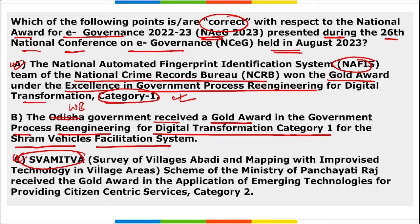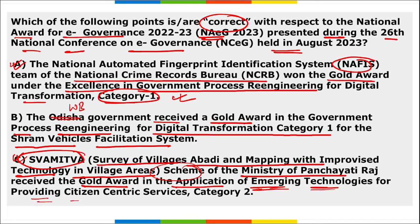Option A states that the NAFIS team of the National Crime Records Bureau won the gold award under excellence in government process re-engineering for digital transformation category 1 — absolutely right. And Swamitva, that is Survey of Villages, Abadi and Mapping with Improvised Technology in Village Areas, the scheme of the Ministry of Panchayati Raj, received the gold award in the application of emerging technologies for providing citizen-centric services in category 2 — absolutely right.